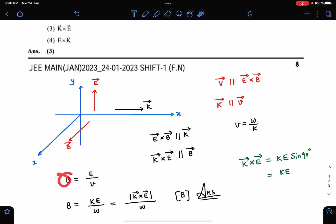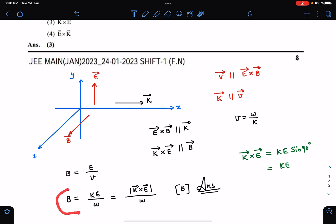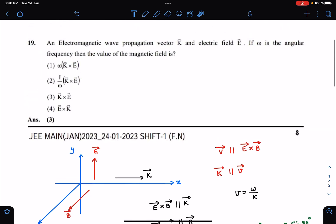So B is E/v and I can write this as B is equal to KE/ω. Since the angle is 90 degrees between them, K cross E magnitude is KE. So the answer should have been (K × E)/ω, option B. But all coaching centers have given answer as 3 in this.